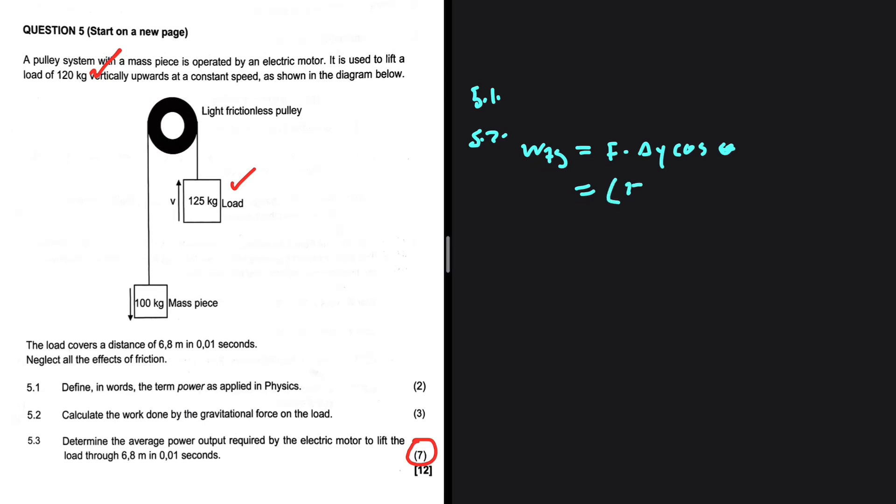So let's go ahead and substitute. Fg equals the mass, let's take 125 multiplied by the gravity which is 9.8. Delta y, it covers a distance of 6.8 meters, so we have 6.8 multiplied by cos of theta.